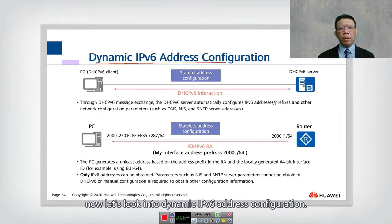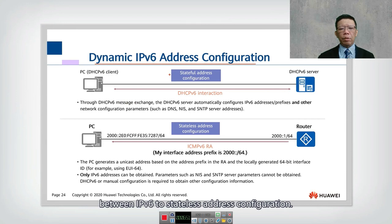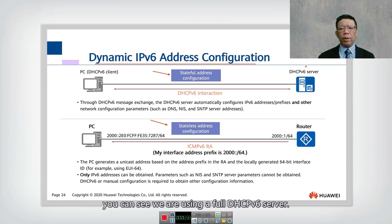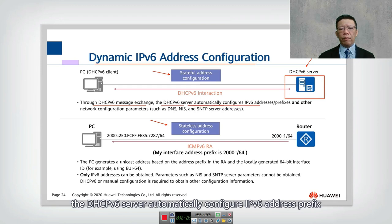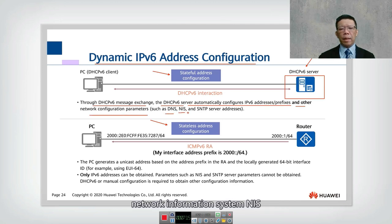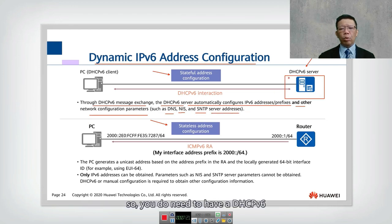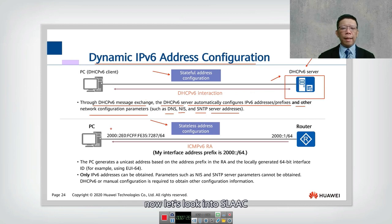Now let's look into dynamic IPv6 address configuration, comparing stateful and stateless address configuration. In stateful address configuration, a full DHCPv6 server is used. Through DHCPv6 message exchange, the DHCPv6 server automatically configures the IPv6 address, prefix, and other network parameters such as DNS, NIS (Network Information System), and SNTP (Simple Network Time Protocol) server addresses.